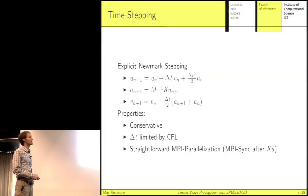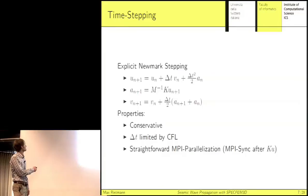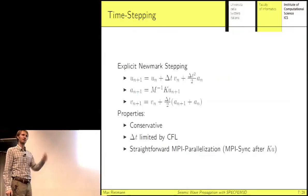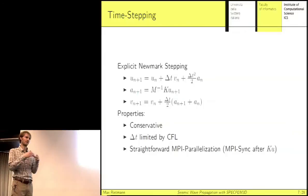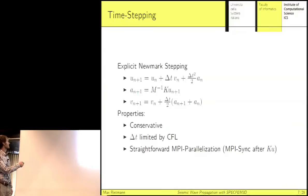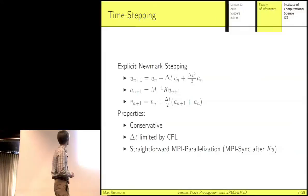For time-stepping, you can use any explicit scheme you want. SPECFEM uses Newmark time-stepping, which is relatively common, conserves energy in a discrete sense, and like all explicit schemes it's limited by the CFL condition — the time step is limited by the smallest element in the mesh normalized by the local velocity. We actually have ways of getting around this now. The time step update is a nice big vector operation, and then we have M-inverse times the stiffness matrix, which is sparse. For parallelization, we just do domain decomposition and synchronize on the boundaries at every time step — that's all the MPI you need.